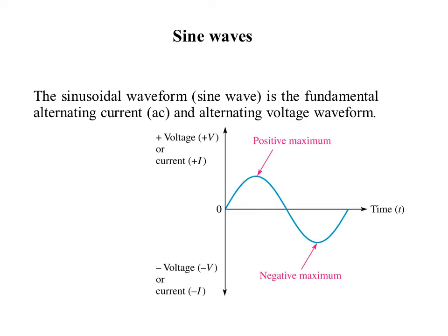Now, what is a sine wave? Many a times, we use it to call any alternating current — we will take the reference as sine wave. The sinusoidal waveform, that is sine wave, is a fundamental of alternating current and alternating voltage waveform. In electrical engineering, the main two quantities we have are voltage and current. For voltage as well as current, if it is an alternating one, always we will take this sine wave as a fundamental wave.